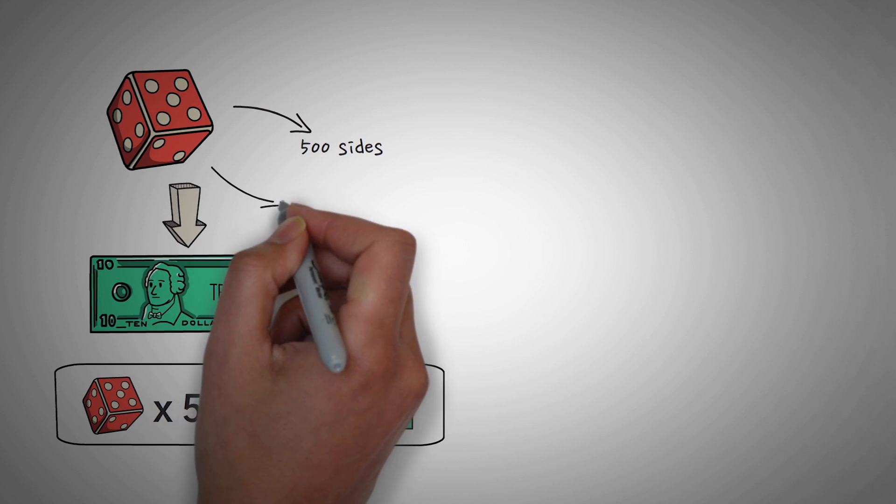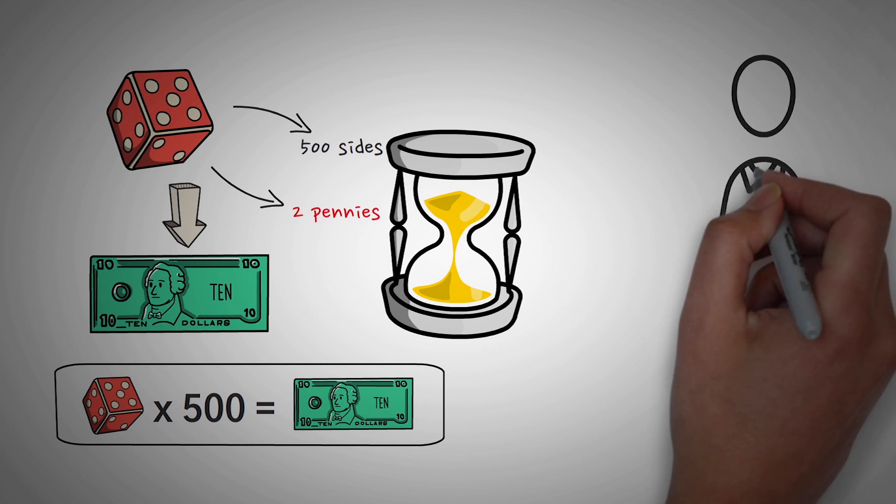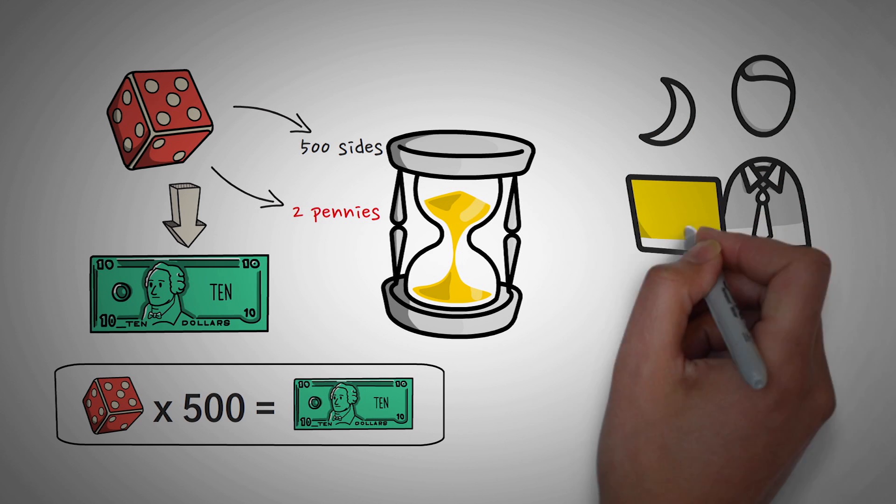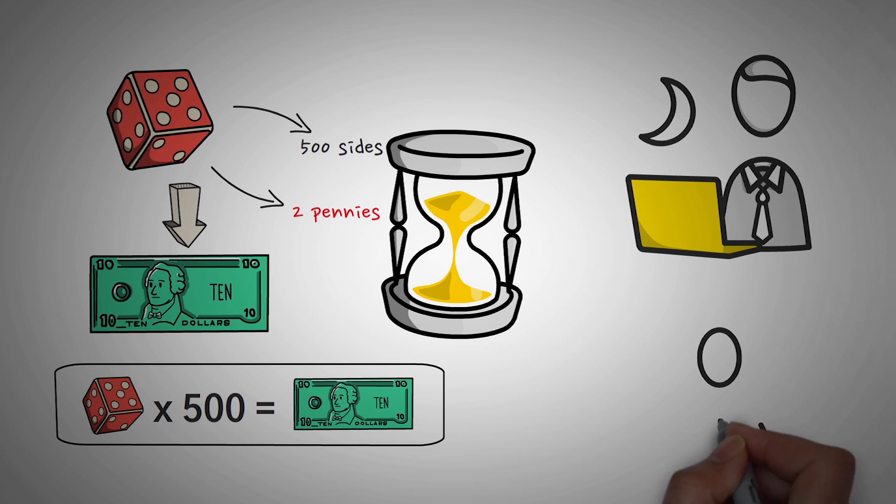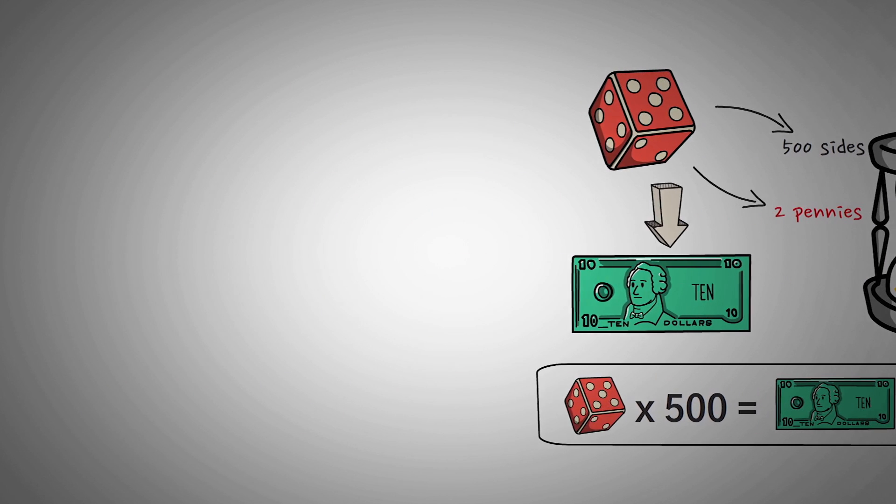Now even though it has the same average payout, about two pennies each time you roll it, it'll take you a lot longer to get that payout. Now this actually is not an issue if you're rolling it all night long, but for example if you only roll it on your break at work, you could be rolling that dice the whole time and not get a single payout. Or you could get lucky and get a payout twice.